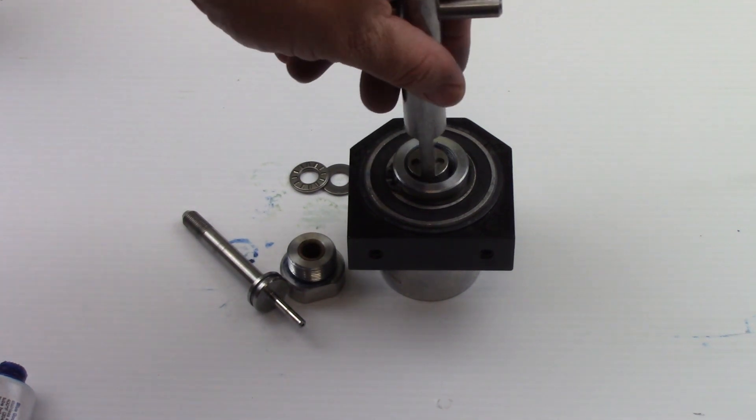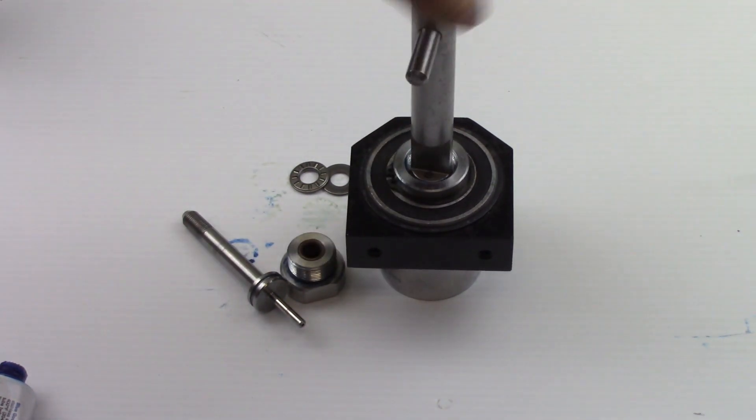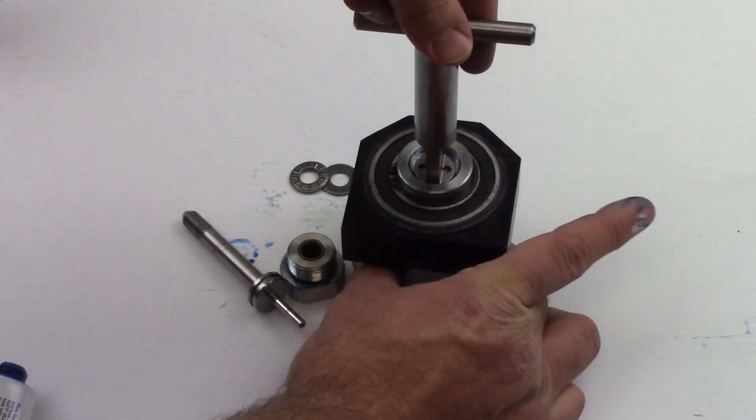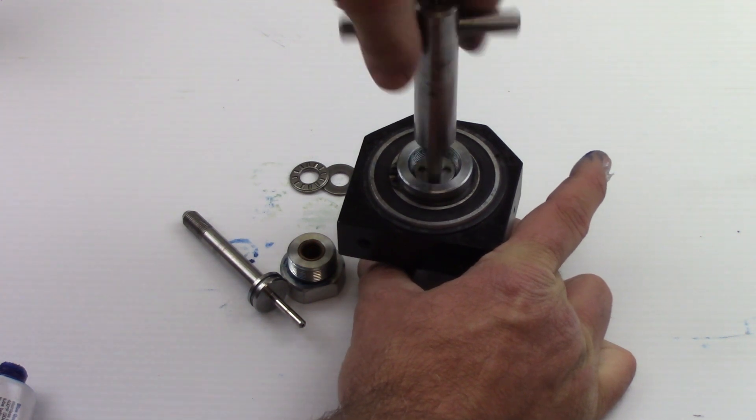Use the seal retainer tool to insert the seal assembly into the swivel body. Screw the seal nut firmly into the swivel body.